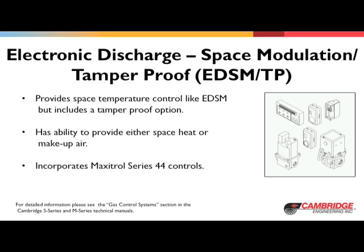The STS setting determines the heater's discharge temperature. The TPS is mounted in the space. The TPS senses the space temperature and communicates a resistance signal back to the amplifier that corresponds to the temperature variation from the STS setting. A 3 degree drift from the STS setting will cause the heater to modulate the discharge temperature to the actual setting of the min and max pots on the amplifier. If the space temperature is close to the STS setting, the heater will discharge somewhere between the min and max pot settings.